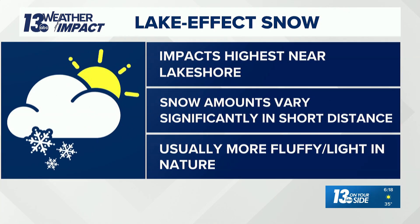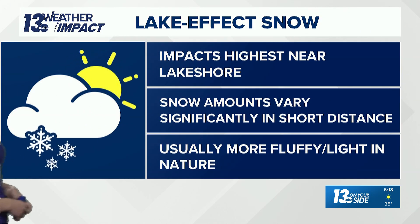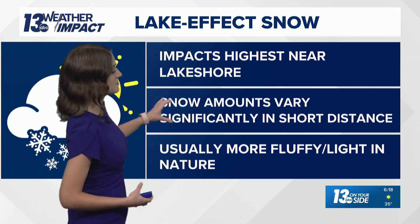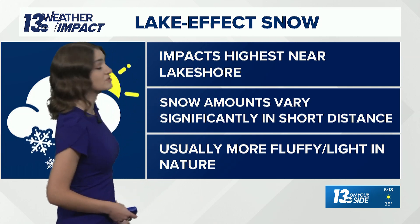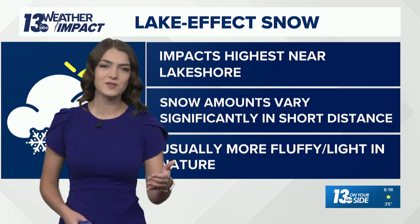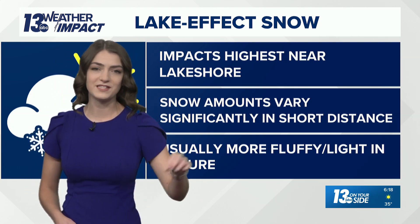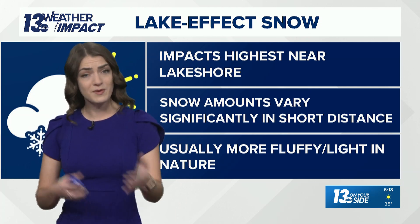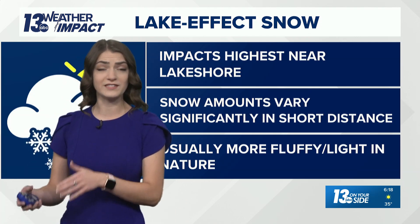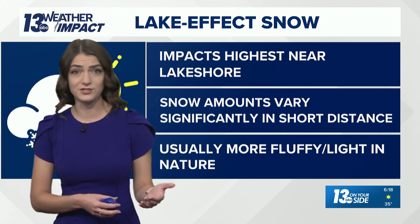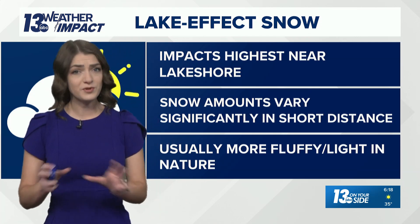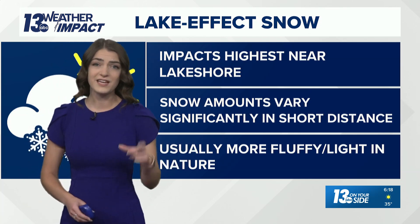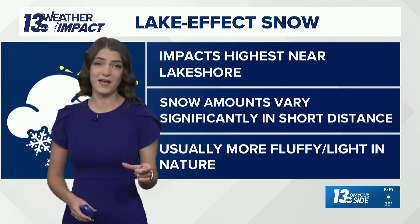So talking about lake effect, those impacts would be highest near the lakeshore, and they would be highly variable too, especially when it comes to snow amounts. What happens with the lake effect setup is that we get banding patterns, and that results in quite a bit more snowfall in some areas as opposed to others. You can get some pretty big variations in snow totals in just a couple of miles span.